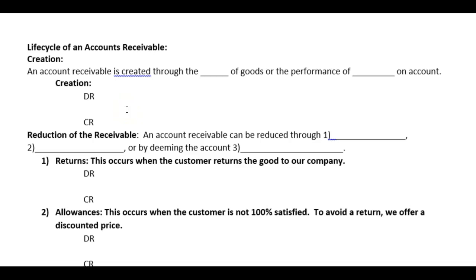Welcome to Chapter 5. We're skipping Chapter 4 for the moment and will come back to it later — it's not a building chapter. Chapter 5 covers internal controls and cash, so we can cover it at any point. But we only have a couple of weeks until our next exam, so we're going to cover Chapters 5 and 6, and that will be all that's on the next exam.